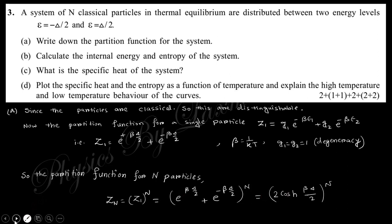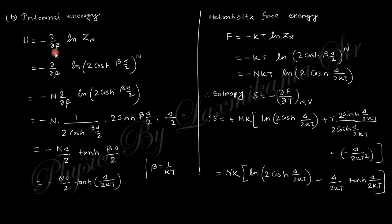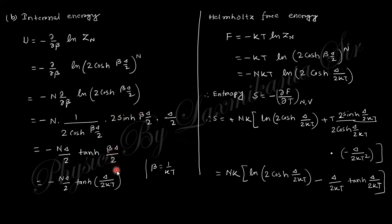The internal energy is U = −∂(ln Z_N)/∂β. Since ln Z_N = N·ln Z₁, taking the derivative: the derivative of ln[2cosh(βΔ/2)] with respect to β gives (Δ/2)·tanh(βΔ/2). Therefore, the internal energy is U = −N(Δ/2)·tanh(βΔ/2).